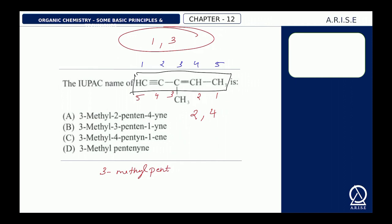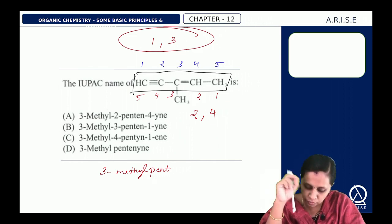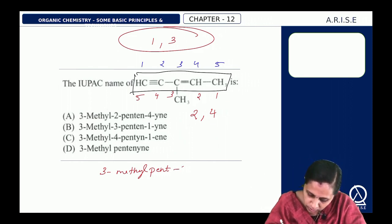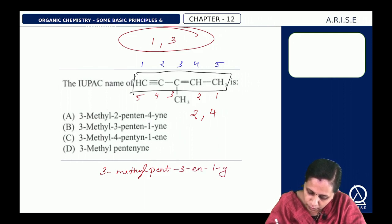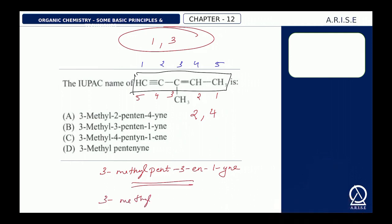There are two functional groups: alkene (ENE) and alkyne (YNE). Written in alphabetical order, ENE comes first — its position is indicated as 3-en-1-yne. This can also be written as 3-methyl-pent-3-en-1-yne. The answer is option B.